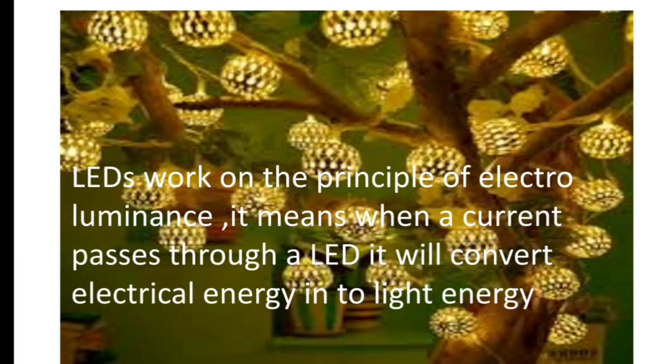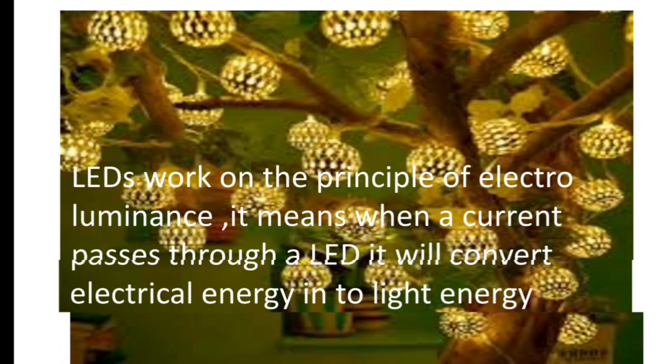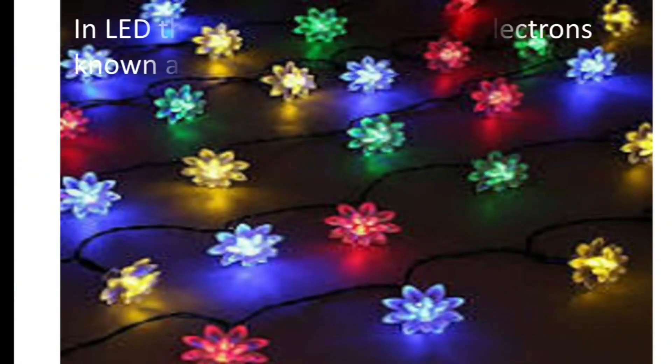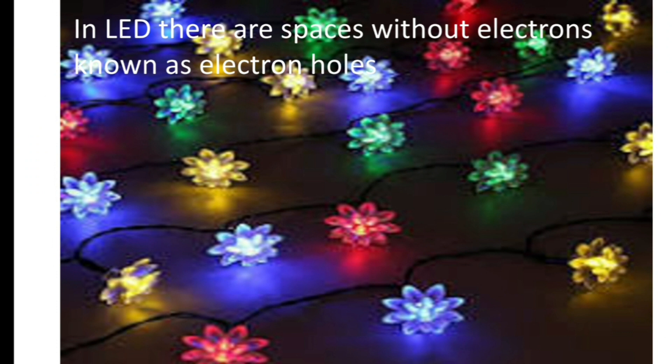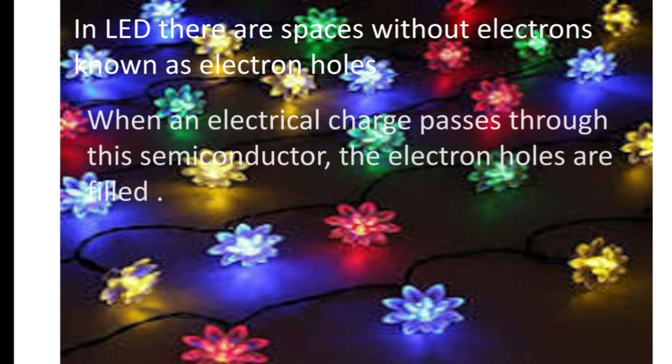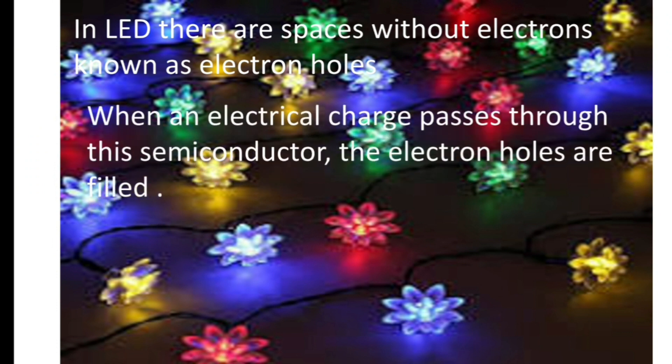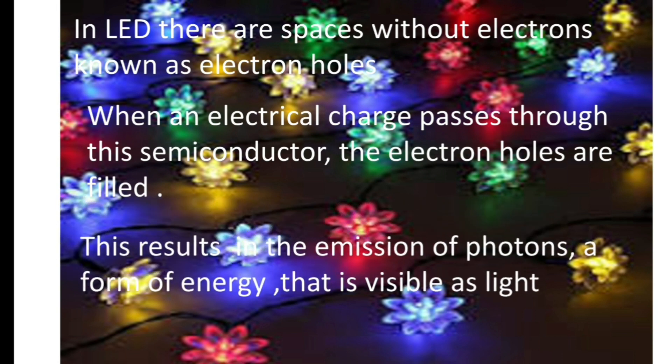LEDs work on the principle of electroluminescence. It means when a current passes through LED, it will convert electrical energy into light energy. In LED, there are spaces without electrons known as electron holes. When an electrical charge passes through the semiconductor, the electron holes are filled. This results in the emission of photons, a form of energy that is visible as light.